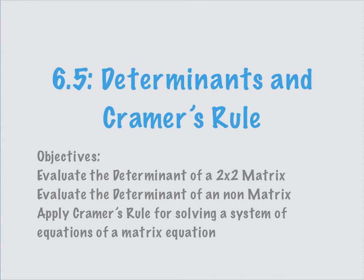Section 6.5 in our book for Math 1050 is about determinants and Cramer's rule. We've already talked about determinants so this is going to be a little bit of review, and then Cramer's rule is a really useful technique for solving a matrix equation or a system of equations. Our objectives today are to evaluate the determinant of a 2 by 2 matrix, evaluate the determinant of an n by n matrix, and apply Cramer's rule for solving a system of equations.